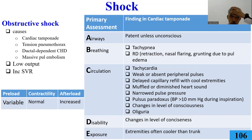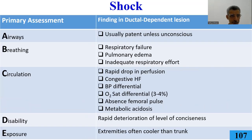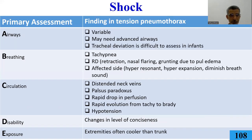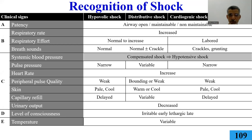With obstructive shock, you also lose heart rate variability because the heart becomes non-compressible — variability between pulses falls below 30%, which is what we call smart monitoring. Management is again ABCDE. The details of each shock type will be covered in a dedicated session.